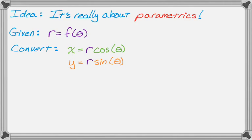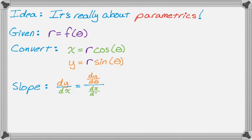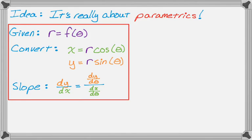It's really important that you remember those two conversion formulas because they're going to come up a lot. Once we have that, we can calculate the slope dy/dx by calculating dy/dθ divided by dx/dθ. It's really just a chain rule type of thing.